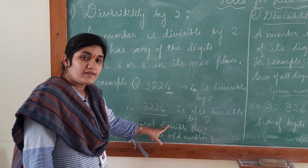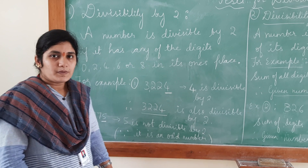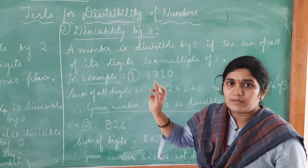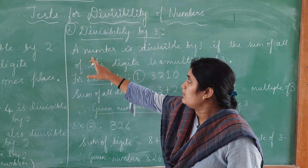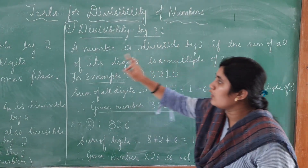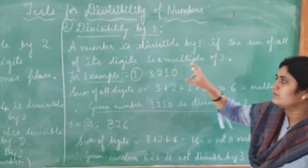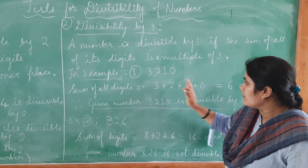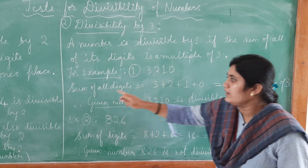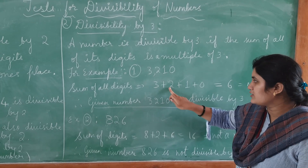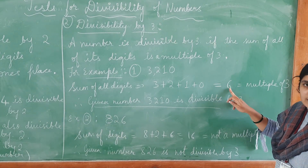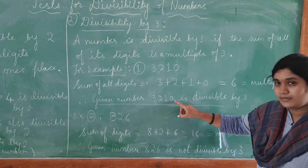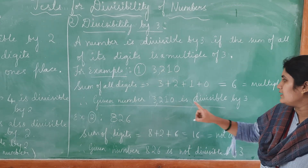Now let us move on to the next divisibility test: divisibility by 3. Here we are checking whether the given number is divisible by 3 or not. A number is divisible by 3 if the sum of all its digits is a multiple of 3. For example, 3,210: the sum of all the digits is 3 plus 2 plus 1 plus 0, which gives 6. So 6 is a multiple of 3; therefore the given number 3,210 is divisible by 3.